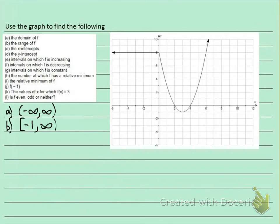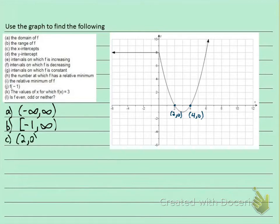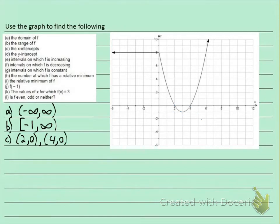Question C: the x-intercepts. We look along the x-axis, and anywhere where the graph crosses are the x-intercepts. We have one x-intercept here and one x-intercept here. The point on the left is at (2, 0) and the point on the right is at (4, 0). So those are the two x-intercepts: (2, 0) and (4, 0), entered separated by a comma.